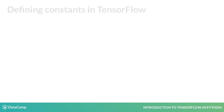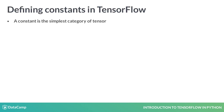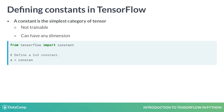We next move on to constants, which are the simplest category of tensor in TensorFlow. A constant does not change and cannot be trained; it can, however, have any dimension. In the code block, we've defined two constants. The constant A is a two-by-three tensor of threes.